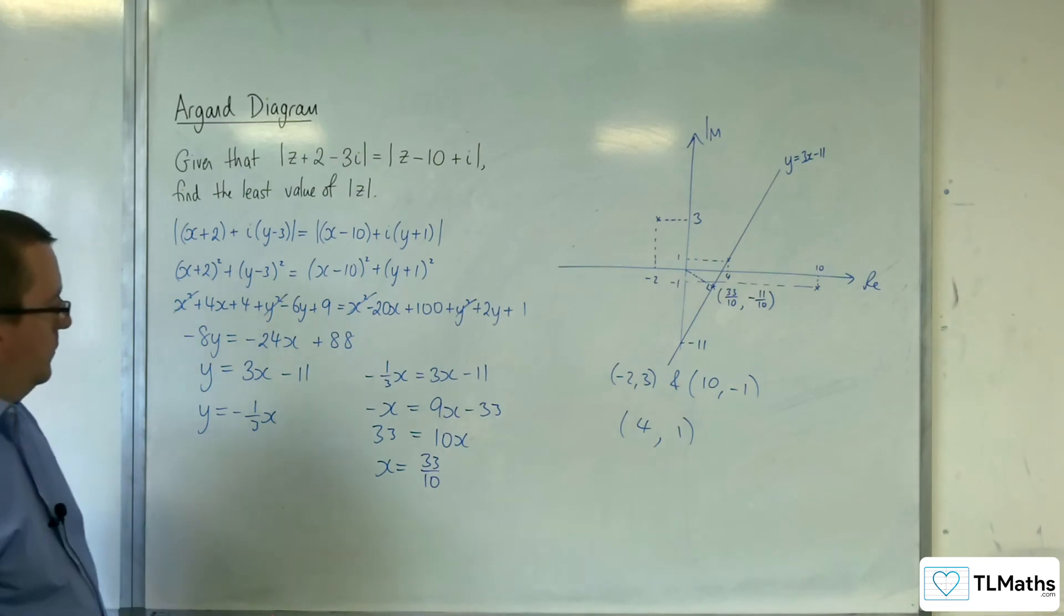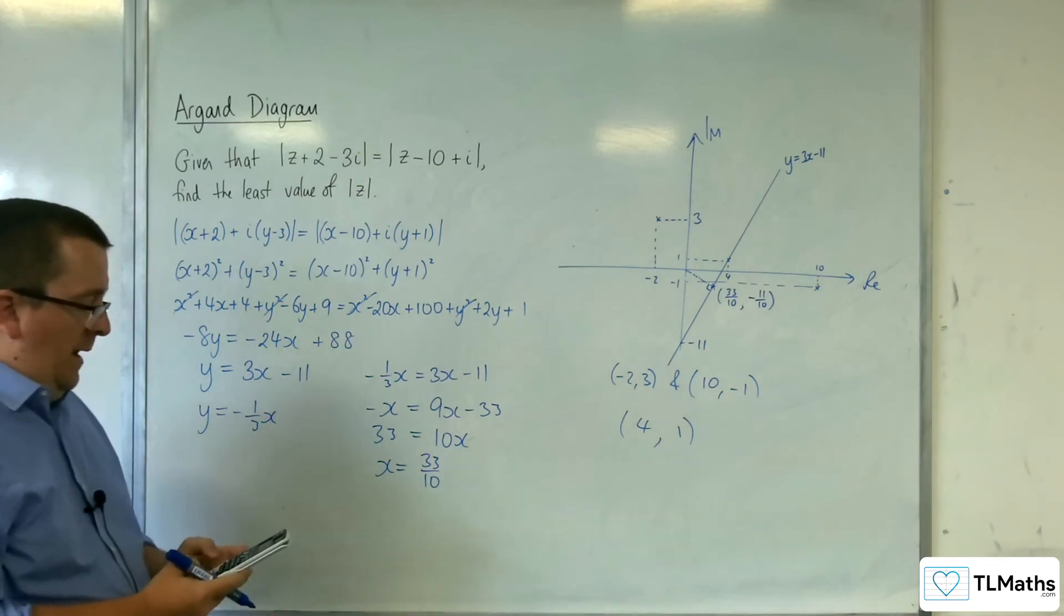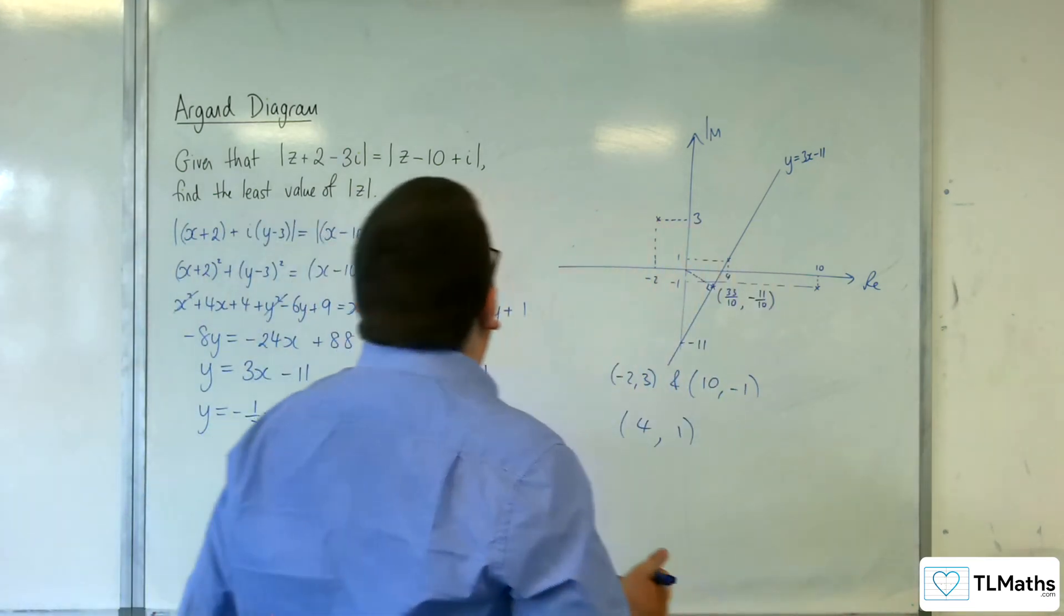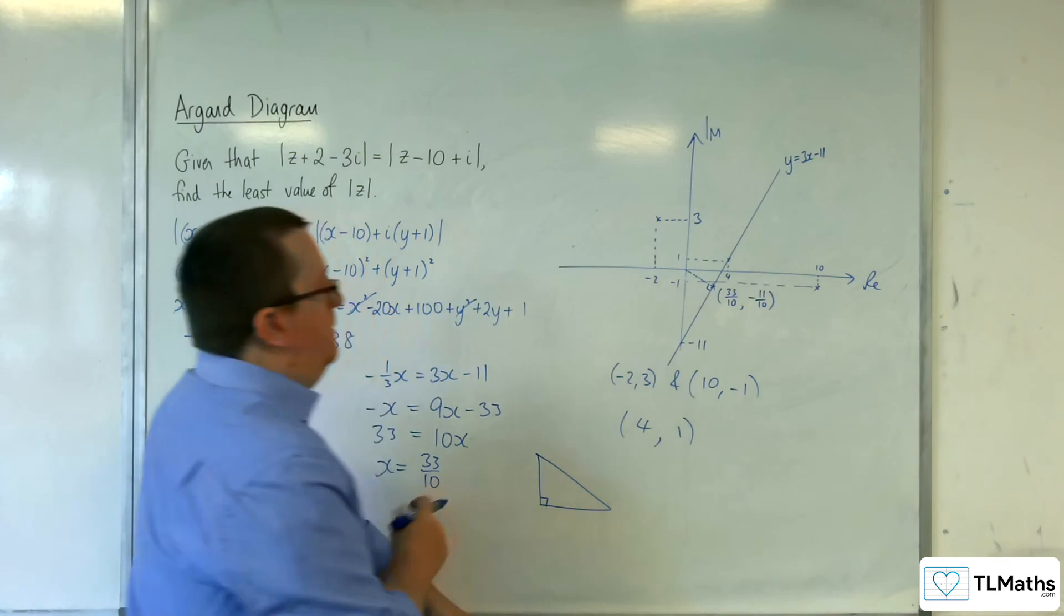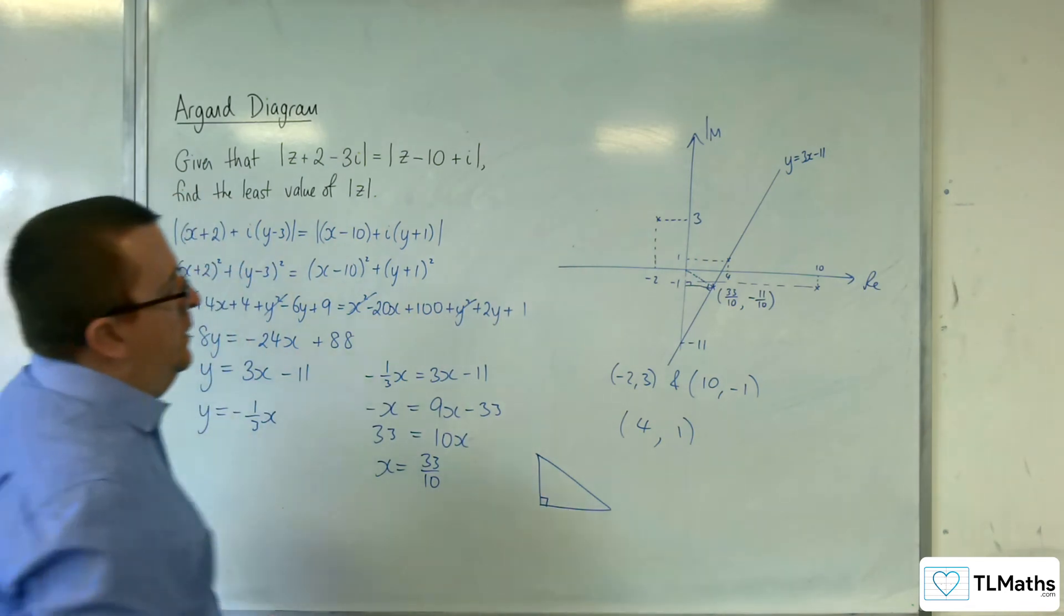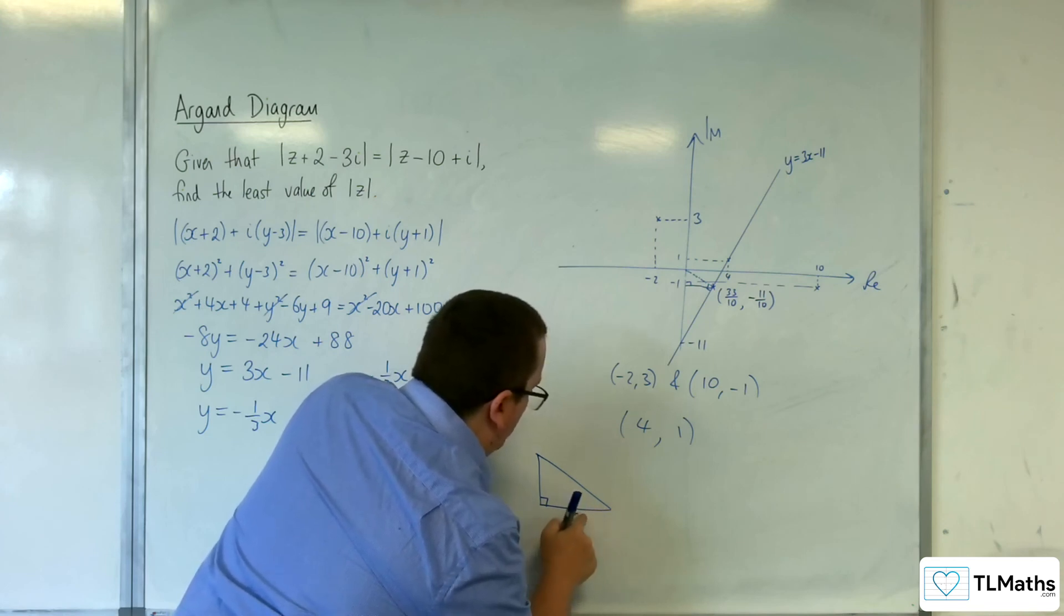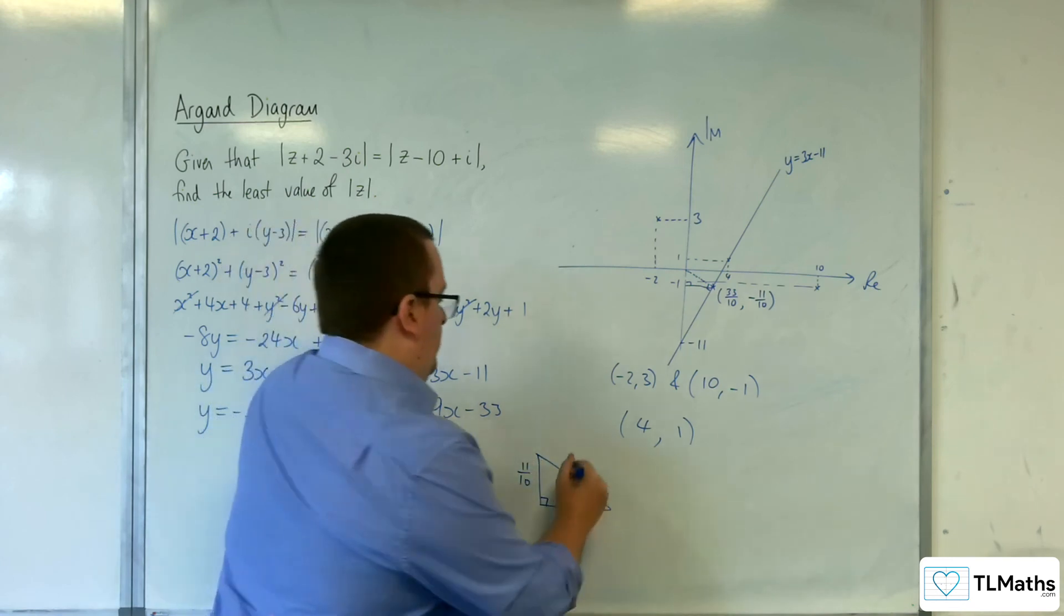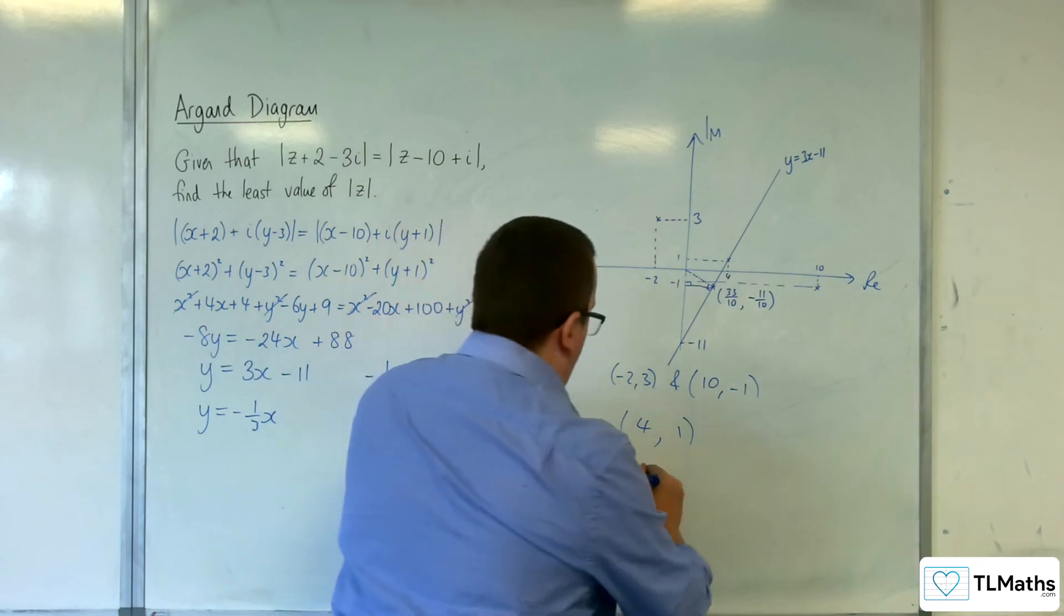Our job now is to find the distance between the point that we've just found and 0, 0. So if we draw a little triangle just to visualize it. So this is my triangle here that I've drawn, just to make it a little bit bigger. We know that the base here is 33 tenths, and that distance there is 11 tenths. So the least value of mod z is the length d, the hypotenuse.